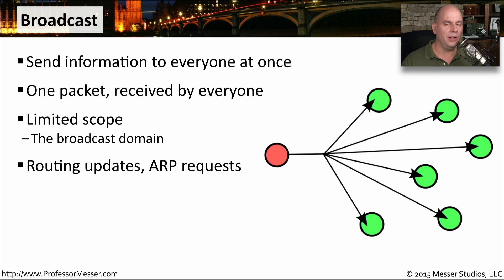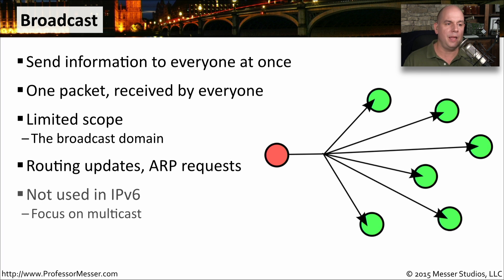As you can imagine, if you have many devices on the subnet all sending broadcasts all the time, every device is going to be so busy listening to all of these broadcasts that it won't have time to do anything else. That's why in IPv6, we got rid of broadcast and instead focused on using multicasts to have very focused communication and avoid the disadvantages of sending broadcasts all over the network.